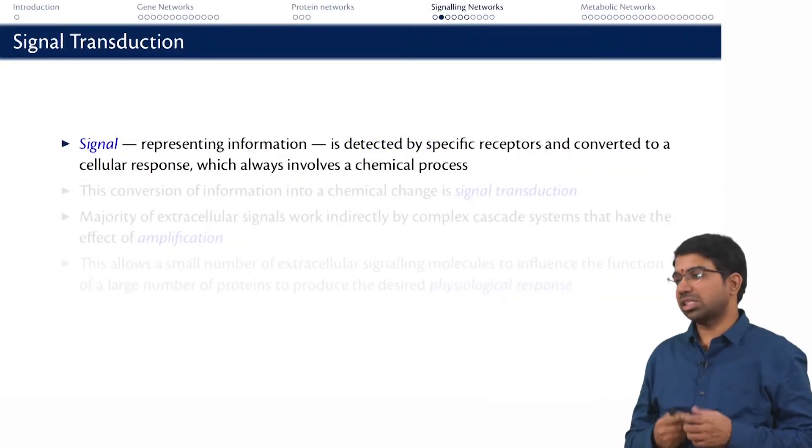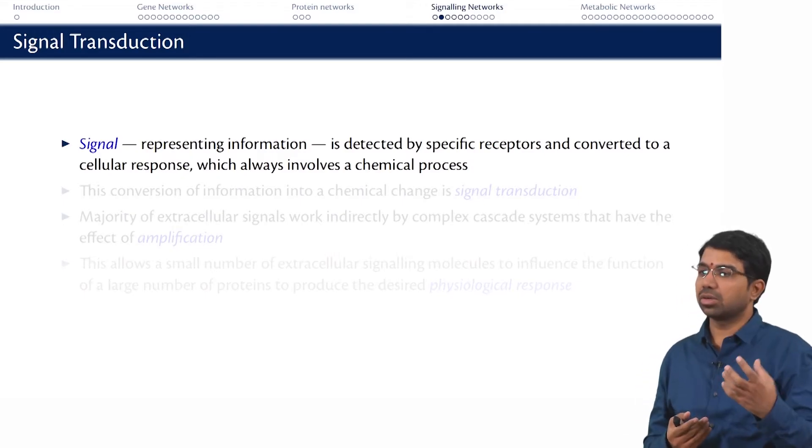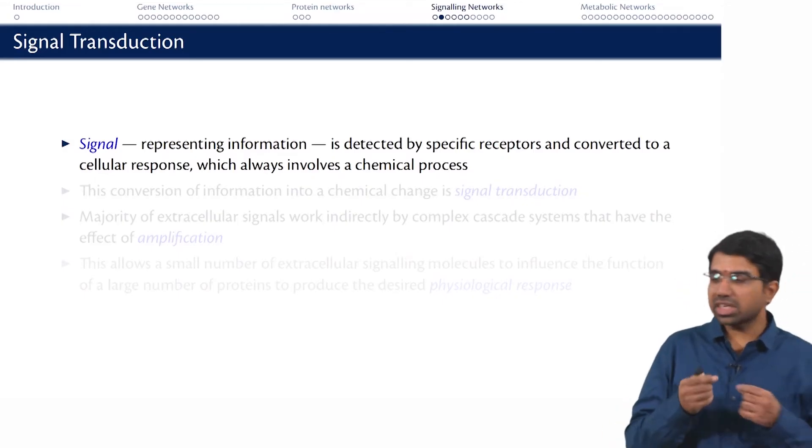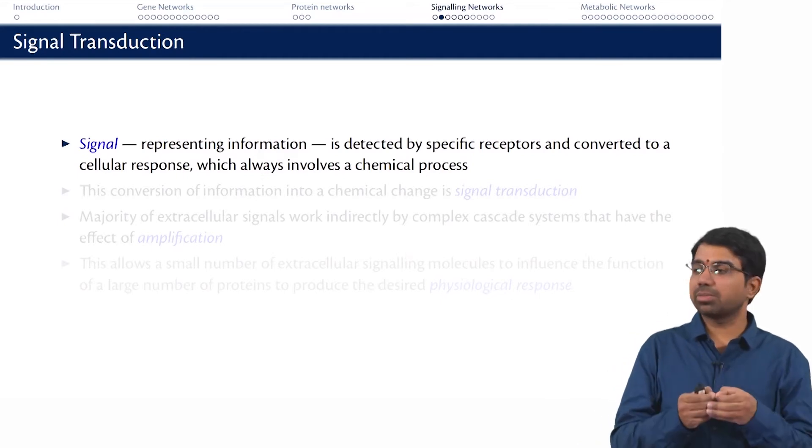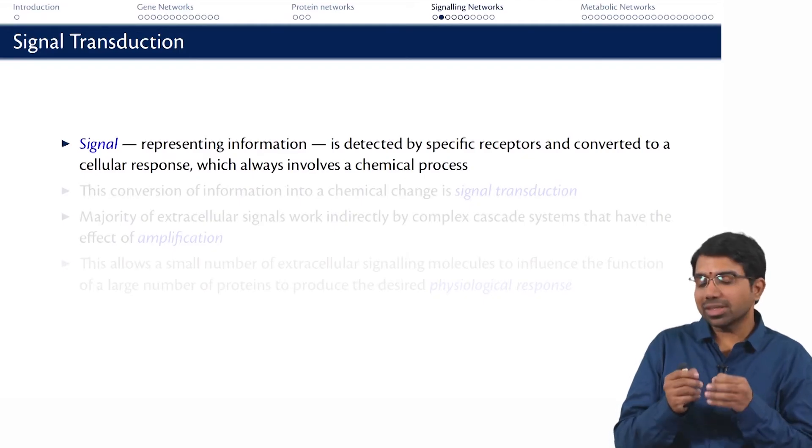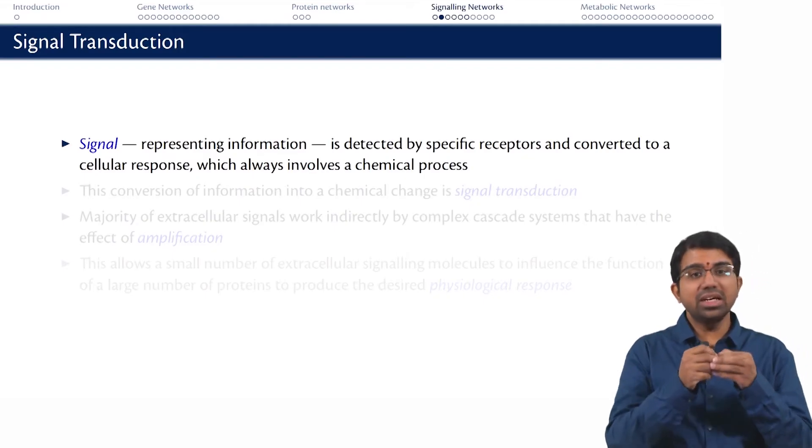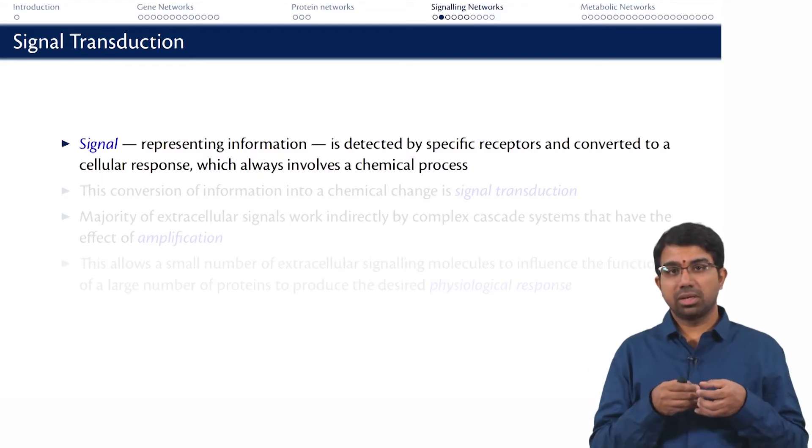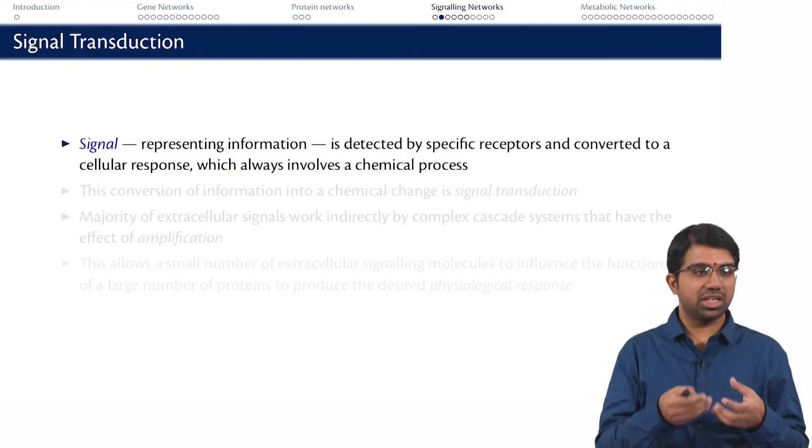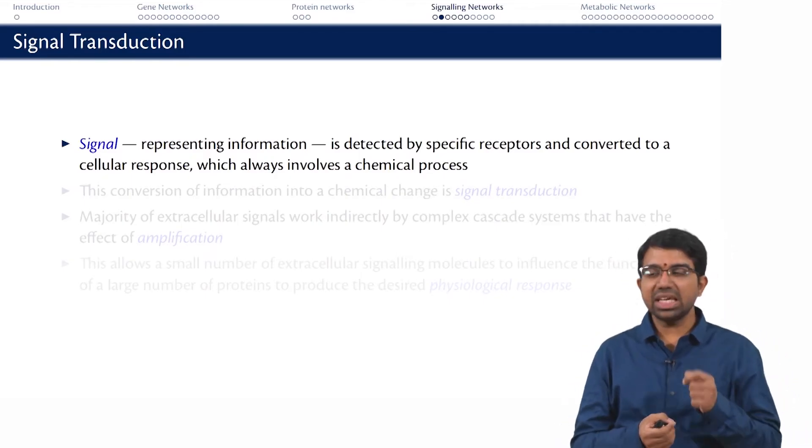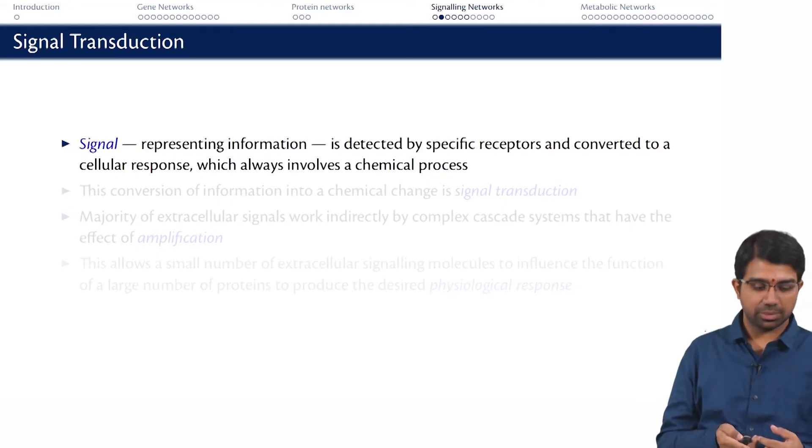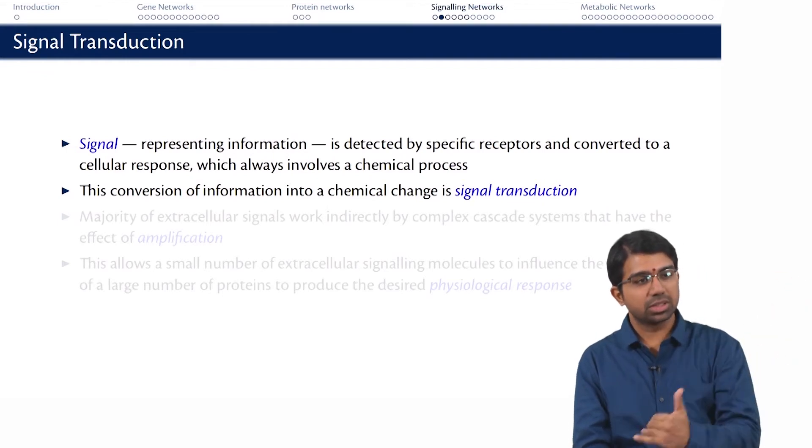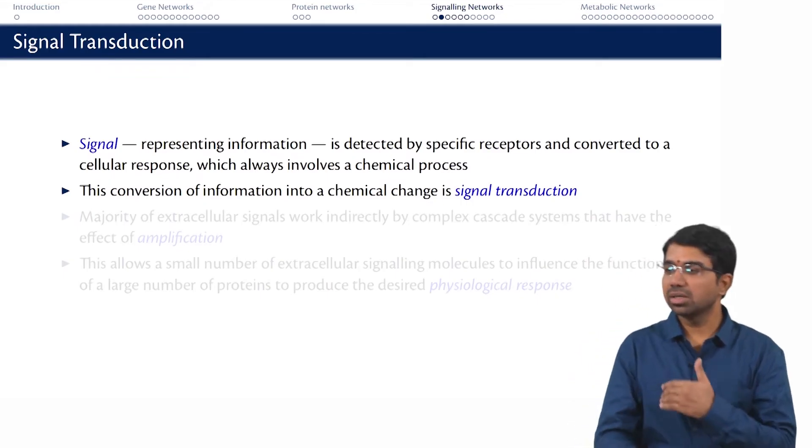There is some signal which is essentially information - it could be the presence of light, it could be the presence of a nutrient, it could be some presence of danger, which represents information essentially, which is detected by specific receptors within the cell. This is converted to an intracellular response which invariably involves a chemical process. This chemical process could involve changes in metabolism, regulation, motility, gene expression, and so many different things. The key ingredient is that something outside the cell is causing something inside the cell. This conversion of extracellular information which is transduced inside the cell to produce an intracellular response is called signal transduction.